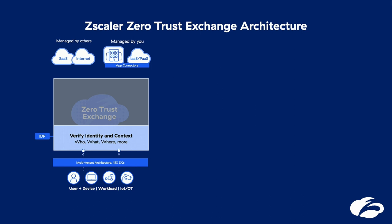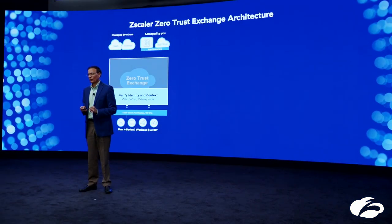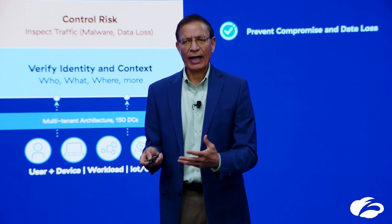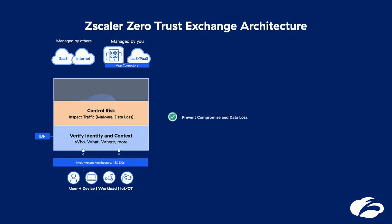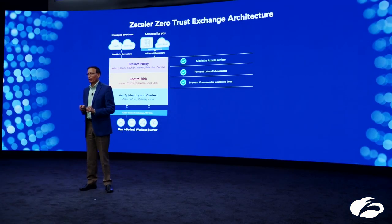Identity can be stolen, so we figure out what device you're coming from — is it managed, unmanaged, a mobile phone, or laptop? We assess where you're coming from and what applications you're headed to. These contexts are an important part of the exchange. If all that looks good, we minimize risk by inspecting traffic for malware and data protection — what's leaking out, what's being sent out. We're like a control point, like an international airport inspecting everything that goes in and out. We can enforce policy to allow connections or block them, or even isolate where we can stream pixels for data protection.